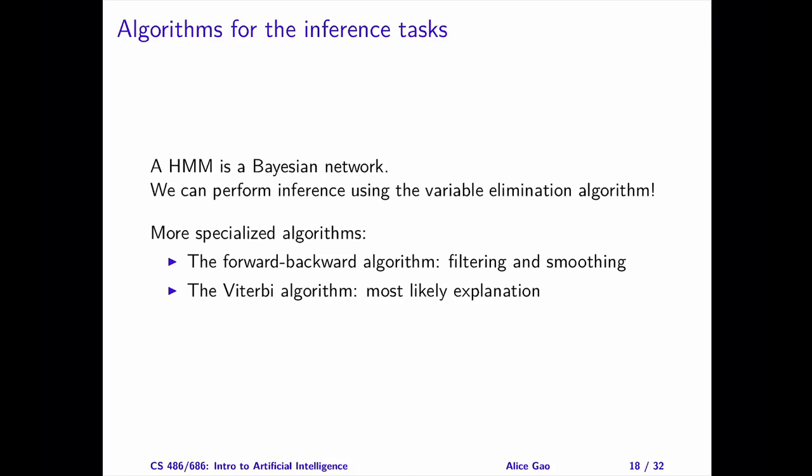However, a hidden Markov model is a special type of Bayesian network. The particular structure of a hidden Markov model allows us to come up with specialized algorithms for performing inference. And for hidden Markov models, these specialized algorithms are more efficient than the variable elimination algorithm.